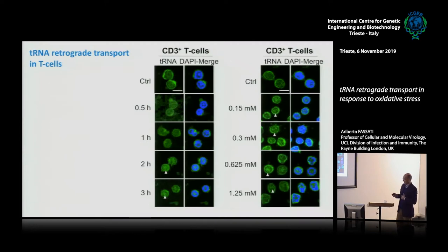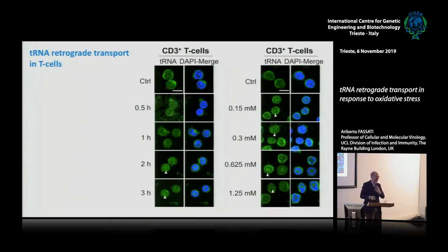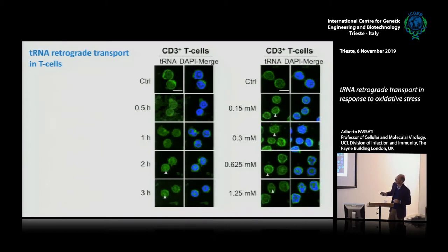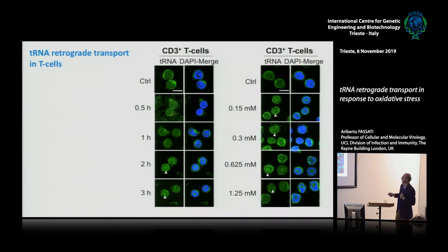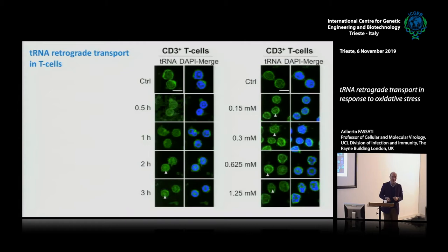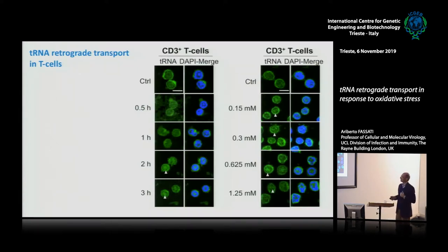The same results were observed in T cells — accumulation of this tRNA was visible, though it is really difficult to measure in tiny T cells. We needed somewhat less H2O2 to induce the response in primary cells, presumably because HeLa cells are a cancer cell line and may have a blunted stress response compared to primary cells.